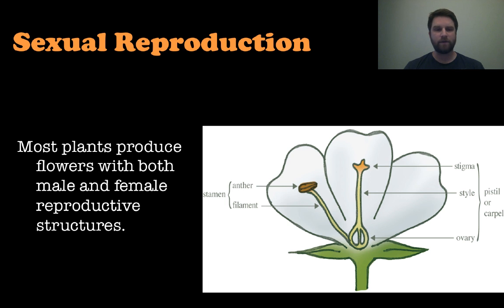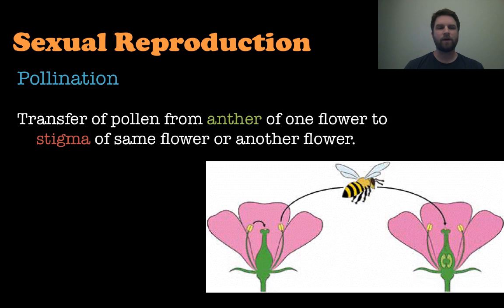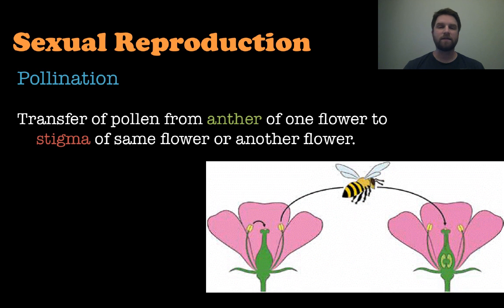Sexual reproduction is a little different. Most plants that have flowers have both male and female reproductive structures. The stamen, made up of the anther and filament, is the male portion. The stigma, style, and ovary are part of the pistil — sometimes called the carpel — and that's the female portion. Sexual reproduction occurs through pollination: the transfer of pollen from the anther of one flower to the stigma of the same or another flower. Some flowers can cross-pollinate, some can self-pollinate.